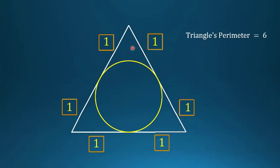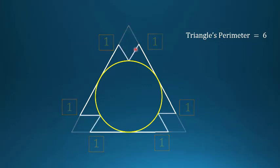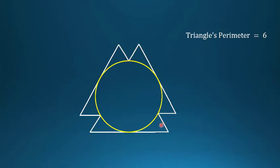In the next step, draw a parallelogram like this — connect each point on the circle so that each part is parallel to the corresponding side. We can say the perimeter of the new figure is again 6.